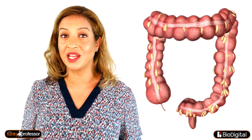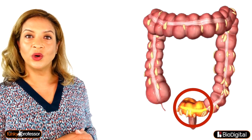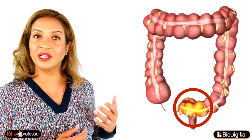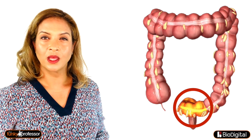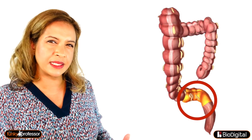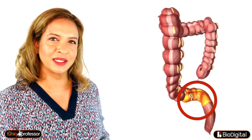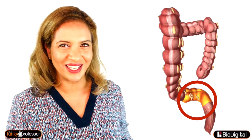Question 4. What is the name of this structure? What are its proximal and distal relations? Which structures lie anteriorly to it? And what is its blood supply?